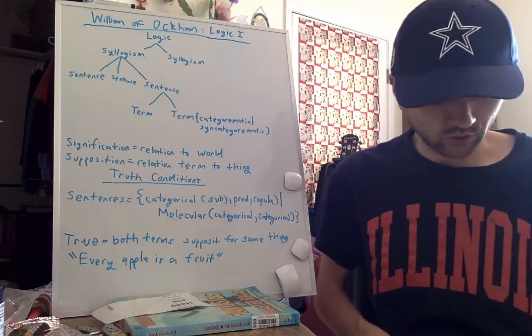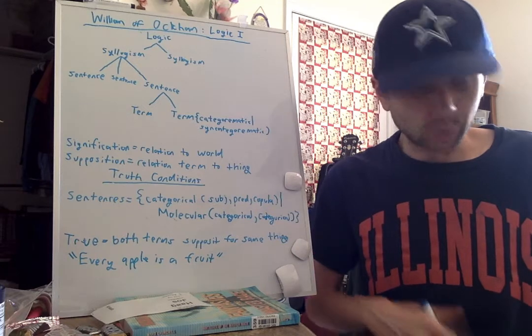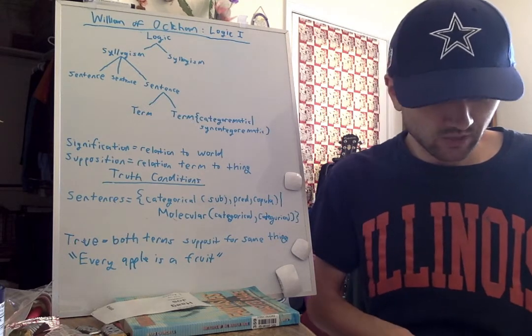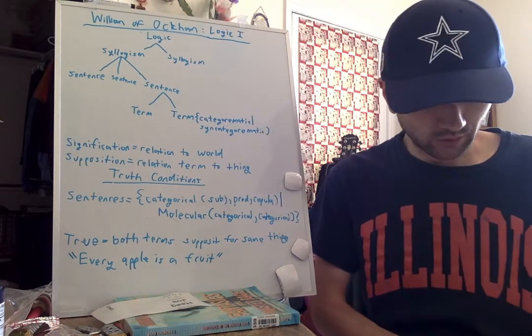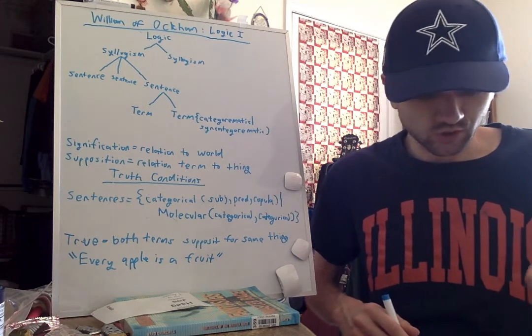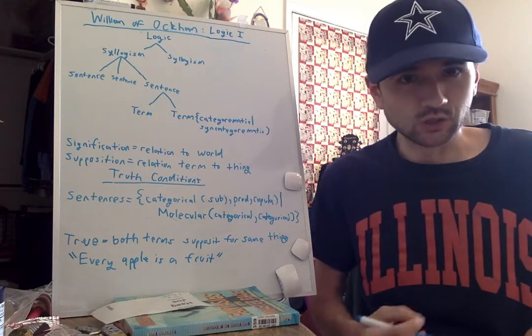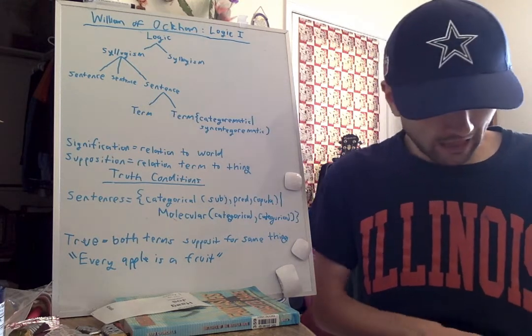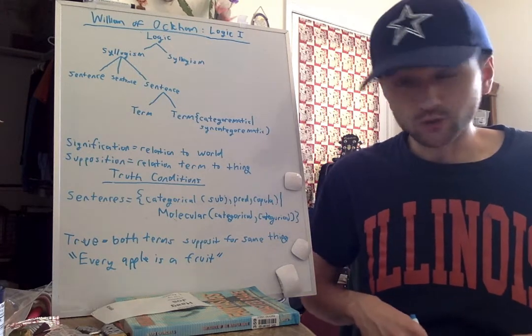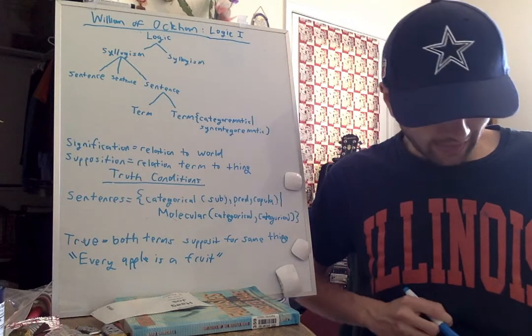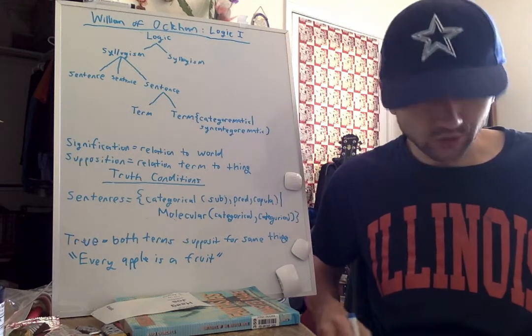There are three types of supposition, and this is huge for understanding truth conditions. Supposition can be personal, where the term stands for the thing in the sentence. It can be simple, where the term stands for a mental term to which it's subordinated, like species. Or it can be material, where a term stands in the sentence for itself. Truth is arrived at through supposition.